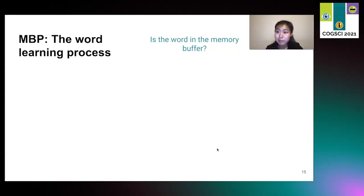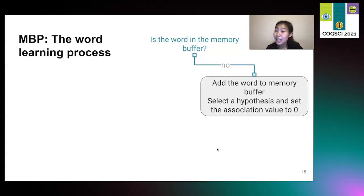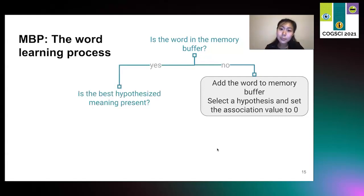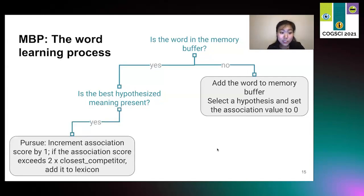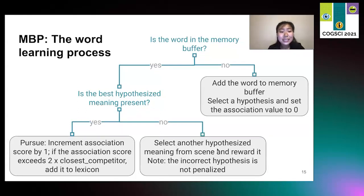In the word learning process, we first check the memory buffer. If the word is not in the memory buffer, then we want to add it. If the memory buffer is full, then we delete randomly as mentioned previously. Once there's space, we add the encountered word. We also select a hypothesis using mutual exclusivity and set the association value to zero. If the word is in the memory buffer, then we check to see if the best hypothesized meaning is present, as Pursuit does. If it is present, then we pursue it, incrementing the association score by one. We compare the association score to the score of its closest competitor, and if it exceeds twice that, then we add it to the lexicon. If the best hypothesized meaning is not present, then we select another hypothesized meaning from the scene and reward it. Note that the incorrect hypothesis is not penalized, which makes updating the scores simplified.